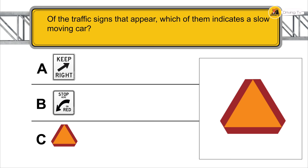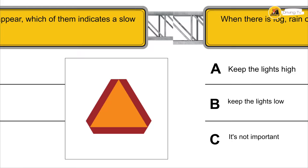Of the traffic signs that appear, which of them indicates a slow-moving vehicle?